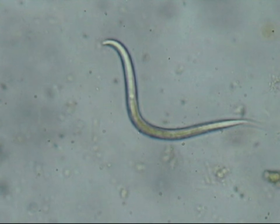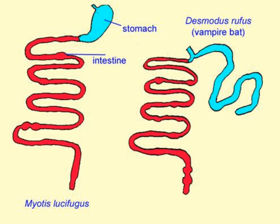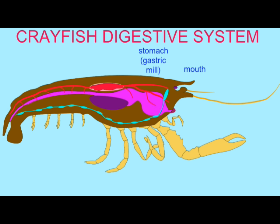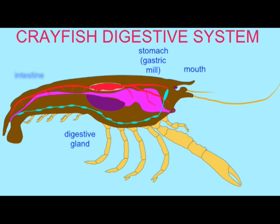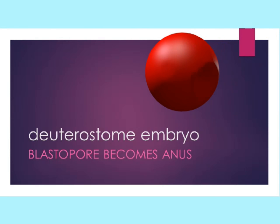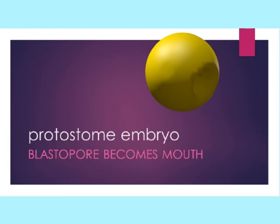You should know a number of the definitions we use, such as coelom — a body cavity in which organs can be suspended — and the idea of a complete gut, which has two openings, both a mouth and an anus. Recognize that the major features which distinguish protostomes and deuterostomes are those of embryos, such as which embryonic opening becomes the mouth.